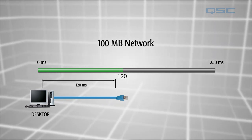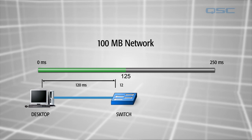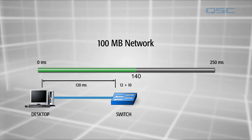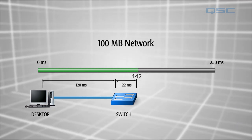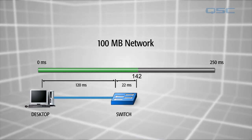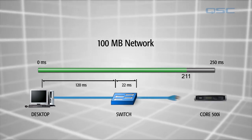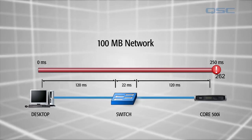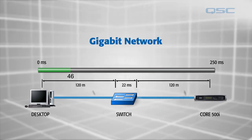Going through a switch takes 12 microseconds to enter and 10 microseconds for the switch to decide where to send the data. So if you have even one switch hop in your path, you're already above 250 microseconds of latency. That's why a gigabit network is required.